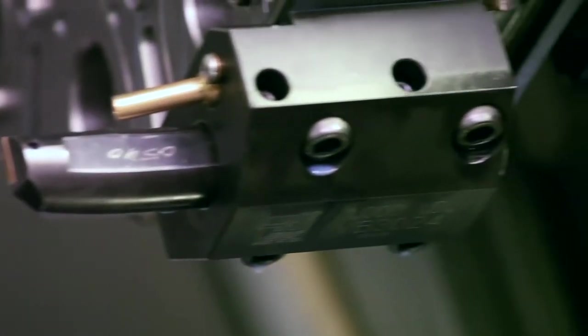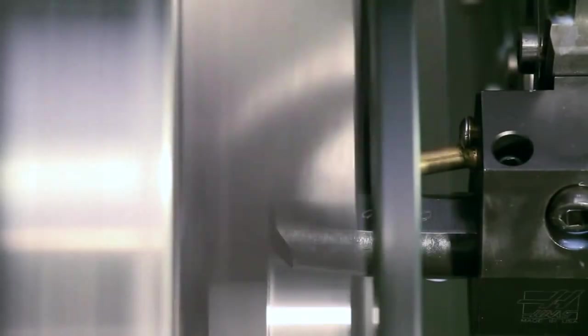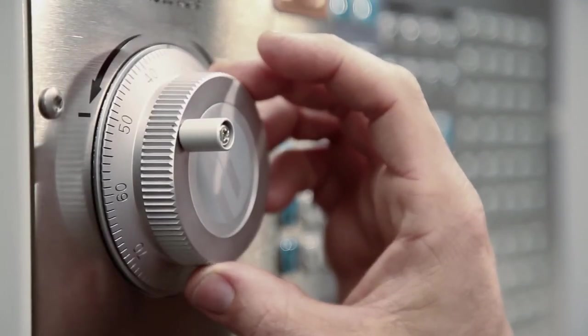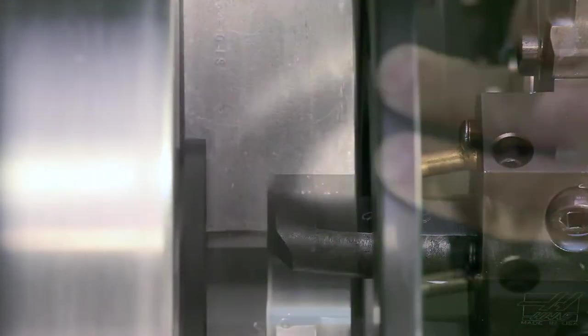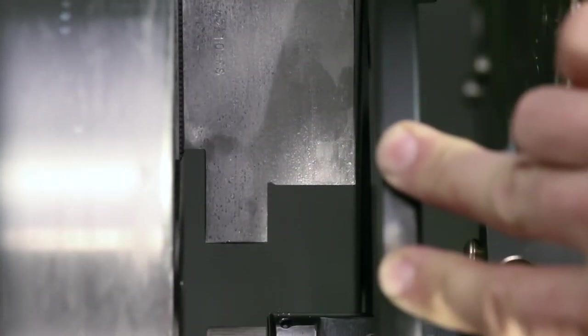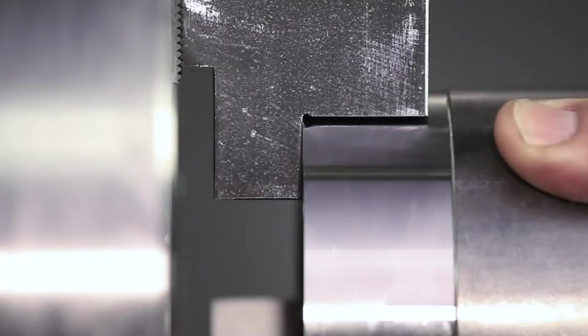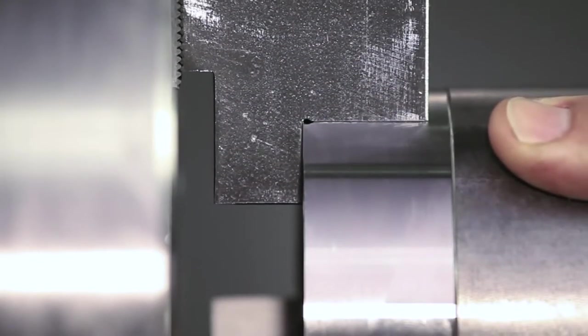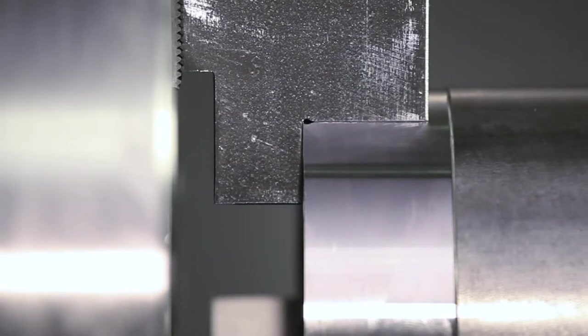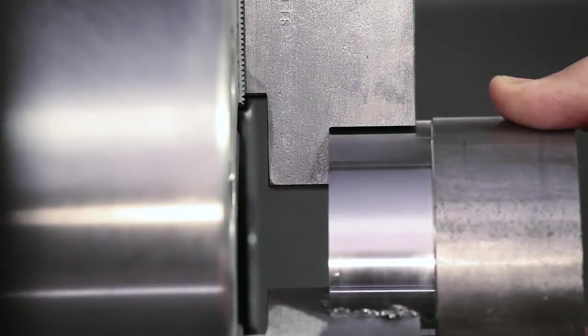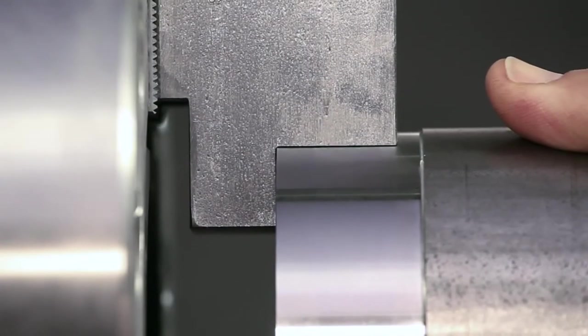Once the jaws have been cut, make a shallow groove at the bottom of the jaws. Any workpiece with sharp edges will now locate correctly against the jaw's back face. Without this groove cut, a sharp edged part will not locate correctly on the back face.